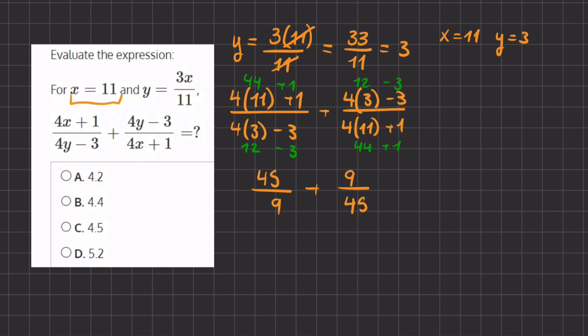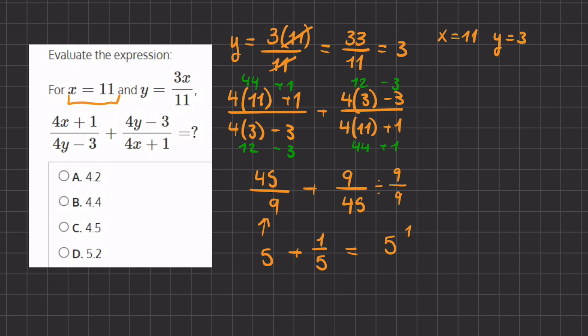Now if we simplify these two fractions, 45 divided by 9 simplifies to 5, plus 9 divided by 45, we can divide the top and bottom by 9. And when we simplify it, we get 1 divided by 5. So when we add these two fractions, or one whole number in a fraction, we get 5 and 1 fifth. And when we simplify this 1 fifth and turn it into a decimal, it turns into 0.2. So when we turn this mixed number into a decimal, we get 5.2, which will be our final answer, and that is answer D.